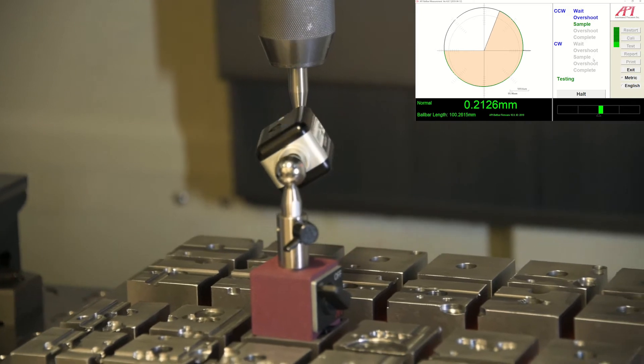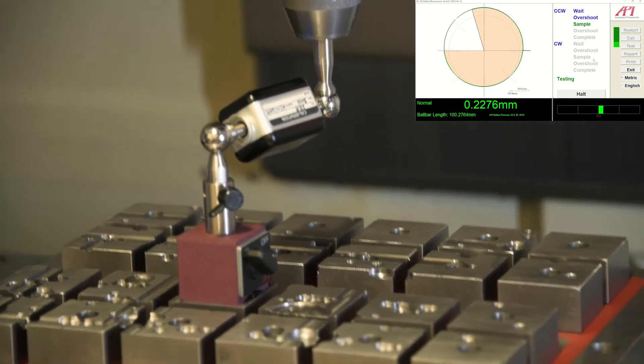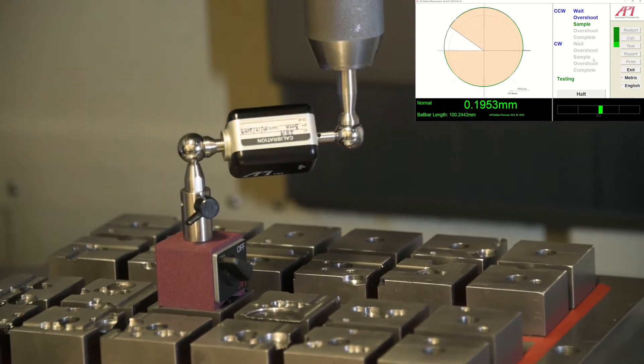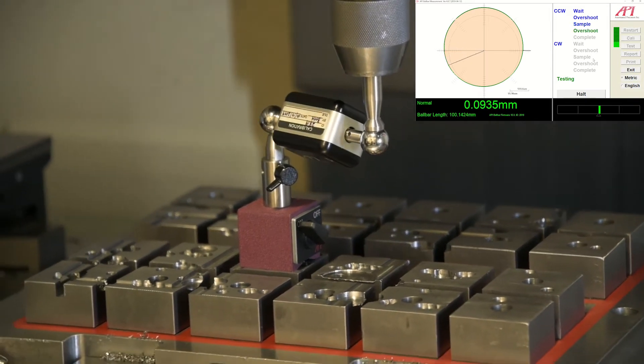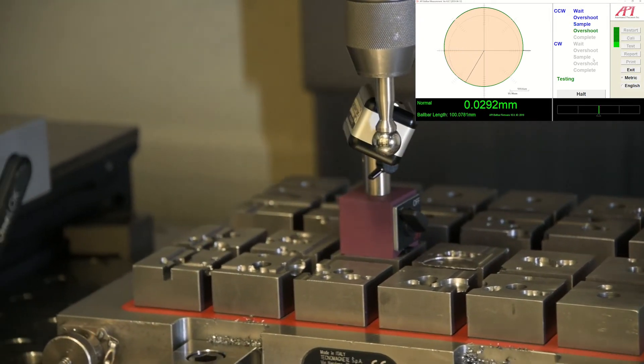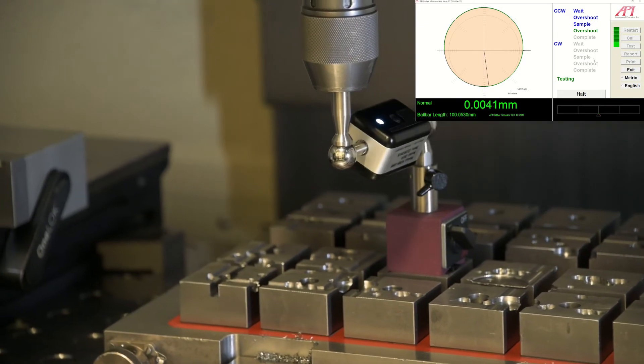So it makes two complete circles in one direction, stops, and then makes two complete circles in the opposite direction. It has 180 degree lead in and 180 degree lead out. That's why the extra circles.